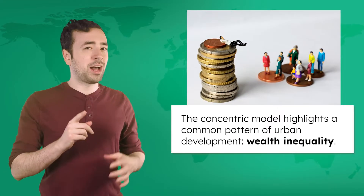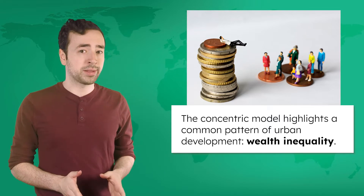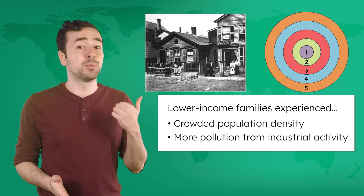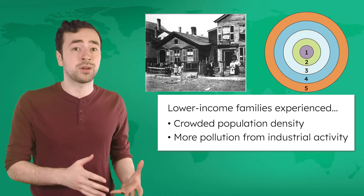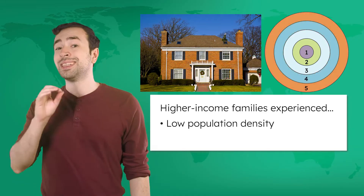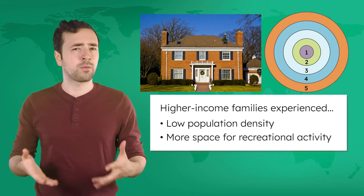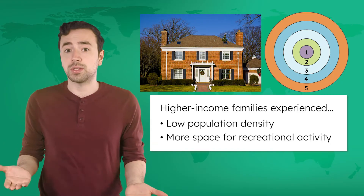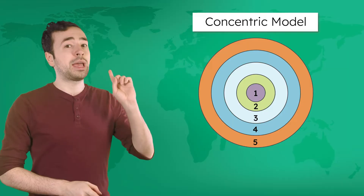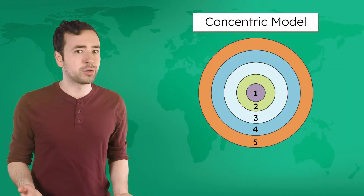The concentric model highlights a common pattern of urban development: wealth inequality. Lower-income families dealt with the crowded residences and industrial pollution of Chicago's urban center. But for higher-income families in the outer rings, population density decreased as homes got bigger and more space was reserved for recreational activity like parks. The concentric model accurately mapped out Chicago's structure in the 1920s, but it wasn't long before another urban model took its place.